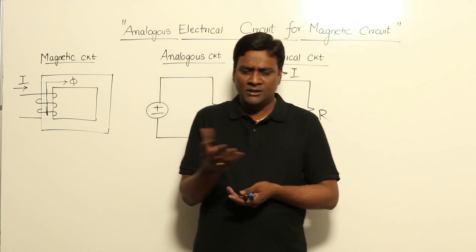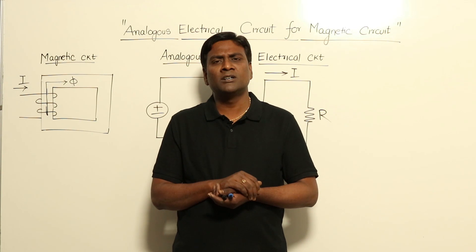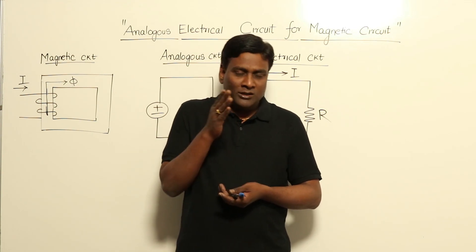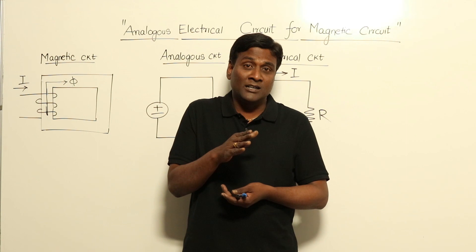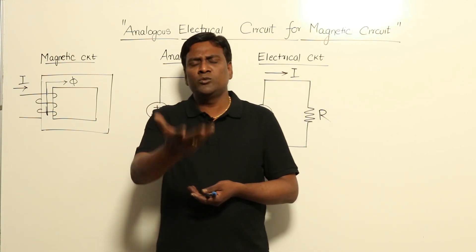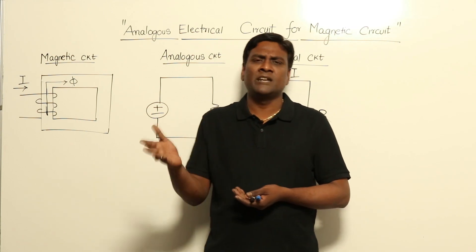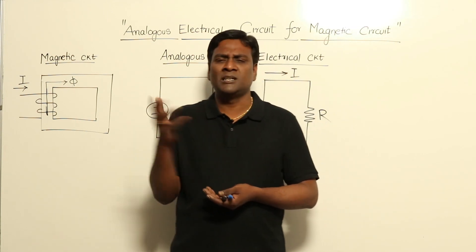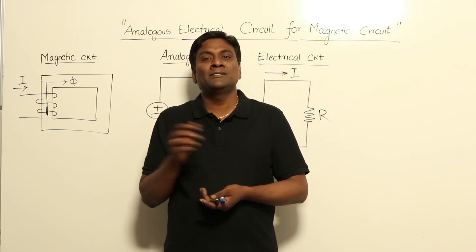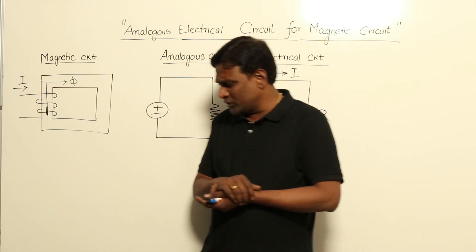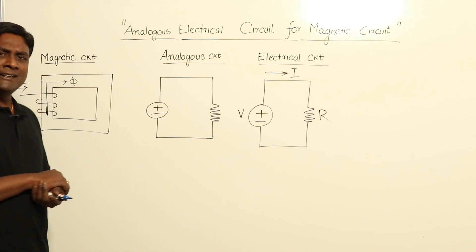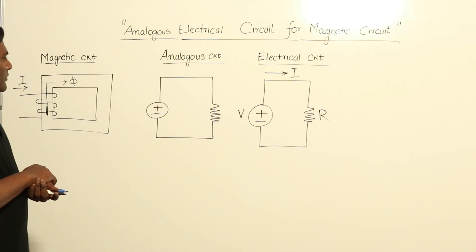In all of our machines, the magnetic system matters because all machines work on magnetic fields only. If we can convert this magnetic system into an electrical analogous system, we can then apply our network theory — KCL, KVL, mesh, nodal theorems — and equally analyze magnetic systems.